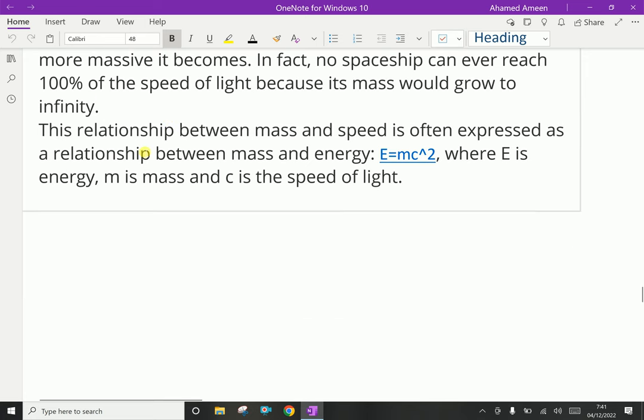This relationship between mass and speed is often expressed as a relationship between mass and energy. That is, E equals mc squared, the very famous Einstein equation, where E is energy, m is mass, and c is the speed of light. We will discuss this equation in later videos.